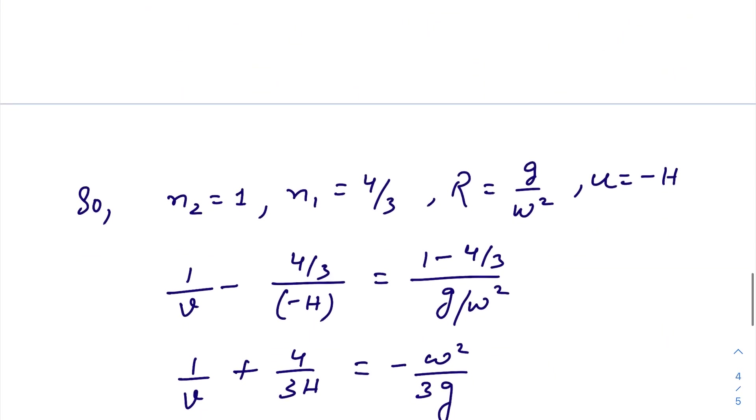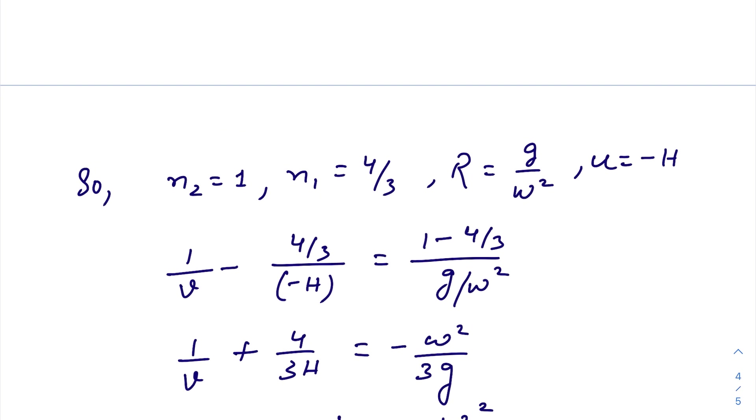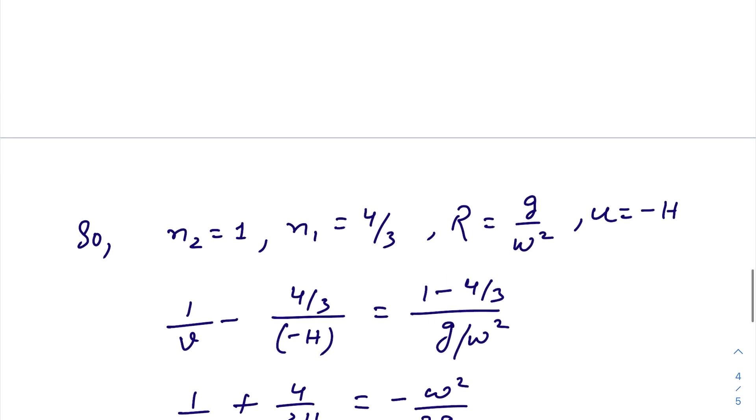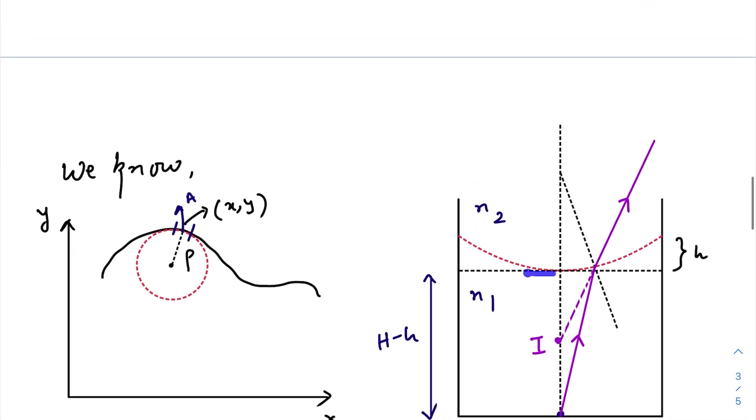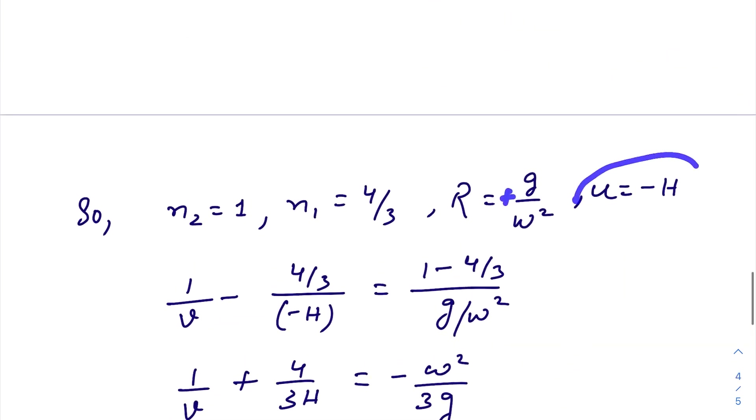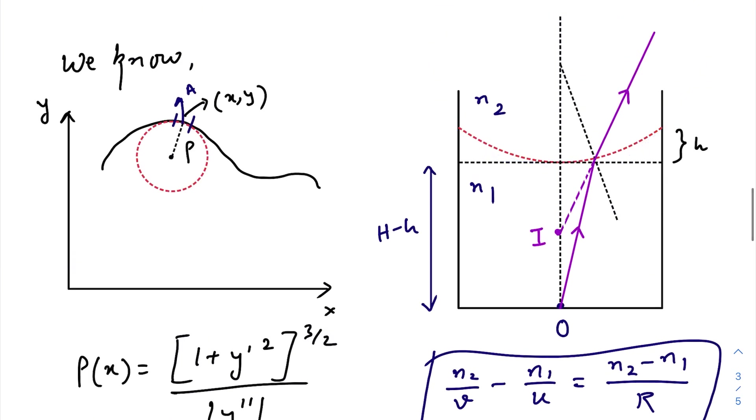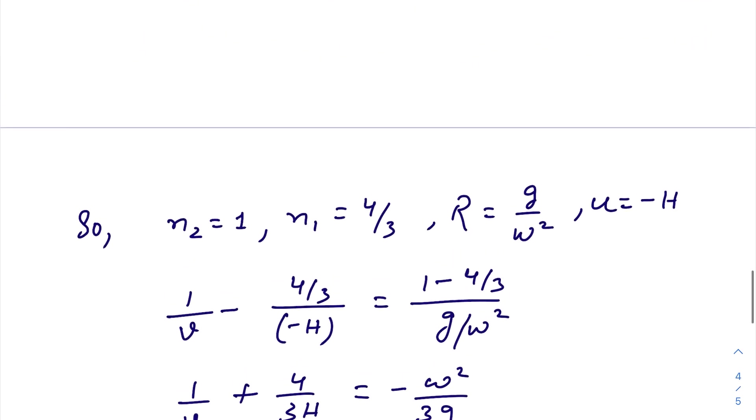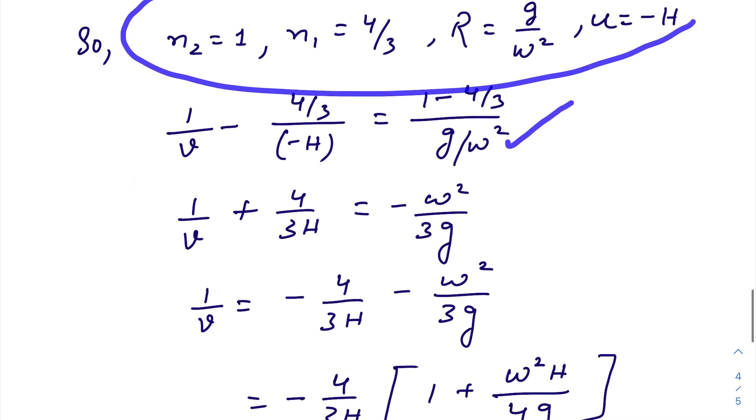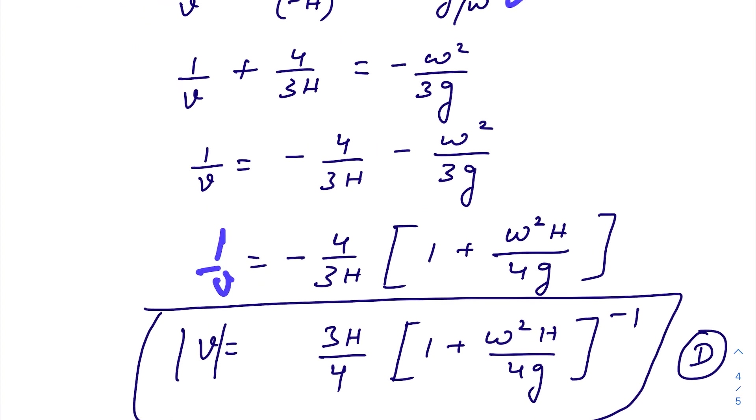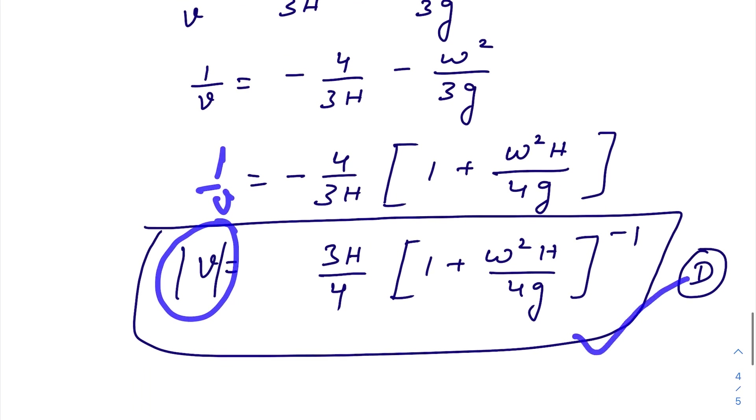Finally we'll use this formula. Just put n₂, that is the final refractive index as 1, initial refractive index as 4/3, R is g/ω². Of course R will be positive g/ω² because the center lies on the positive side of the diagram. u is negative H. Actually u should be negative of (capital H - small h), but in the question they have already mentioned that small h is very much less than capital H, so we can just write -H. Now just put these values in the expression, and finally you will get 1/v...